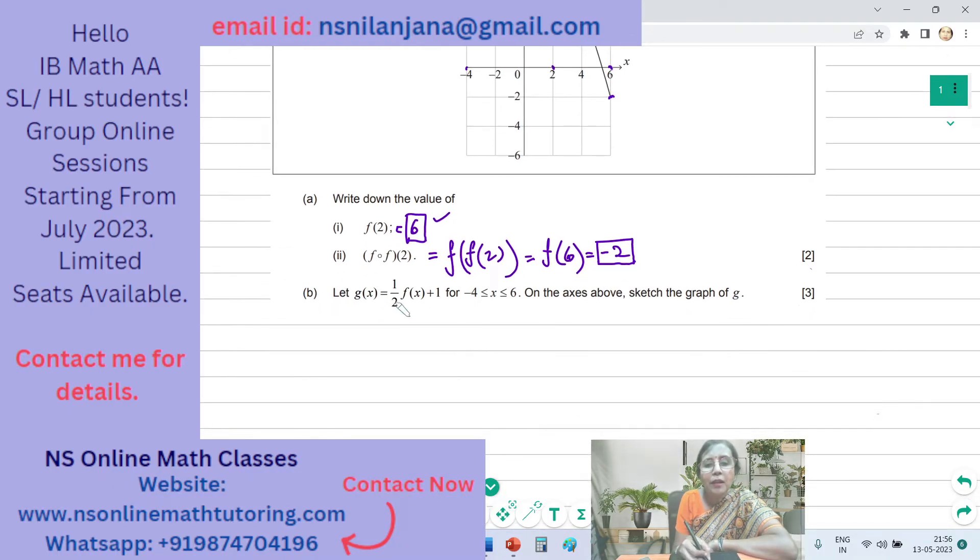Subpart B, let G of X equal to half of F of X plus 1. X is having the same domain from negative 4 to 6, both included. On the axis above, sketch the graph of G. Subpart A contains 2 marks and this subpart B contains 3 marks.